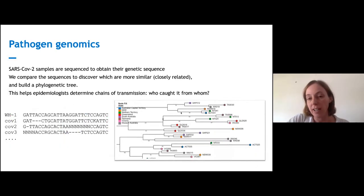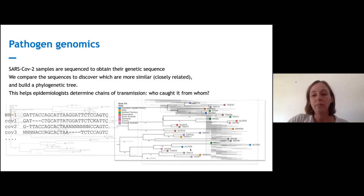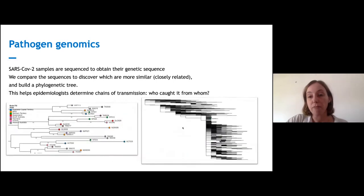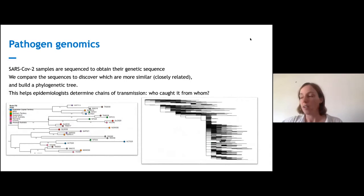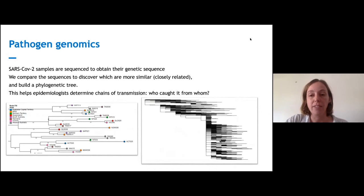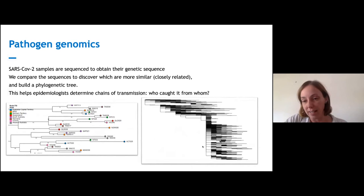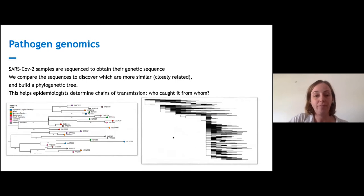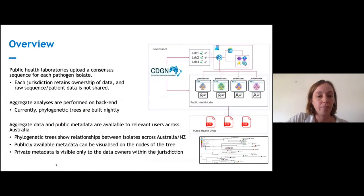Here is a very zoomed-out picture of the real tree from December — the tree is bigger now, but as you can see it's pretty huge. There are tens of thousands of samples in the database. This is the Australian tree, not international samples. And you can see this dense cluster down here — that's the Victorian second wave, where everything's very closely related because it expanded really fast.